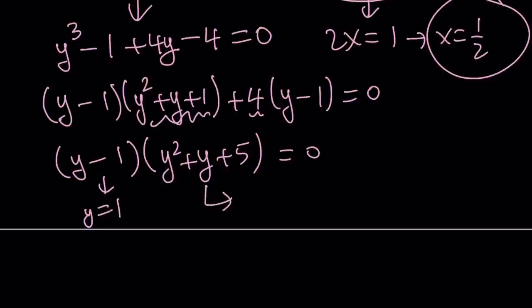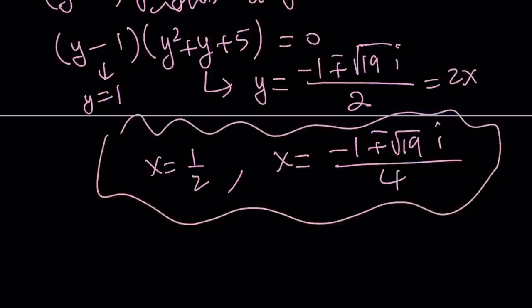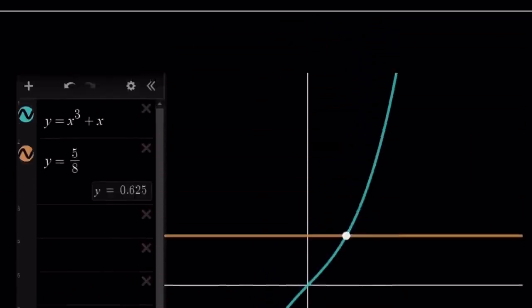If you take out y minus 1, you get y squared plus y plus 1 plus 4, which is y squared plus y plus 5 equals 0. We already know y equals 1 is a solution, and that gave us x equals 1 half. But the other one, unfortunately, is not going to give us real solutions. Negative b plus minus the square root of b squared, which is 1, minus 4ac, which is 20. 1 minus 20 is negative 19, so we can write it as square root of 19i with the imaginary number, all divided by 2. And since y equals 2x, half of this is the x value. So x is negative 1 plus minus the square root of 19i divided by 4, and x equals 1 half is the other solution. Those are the three solutions that you get by using the second method.